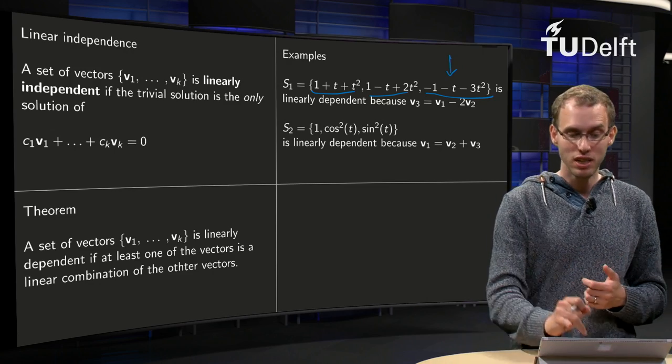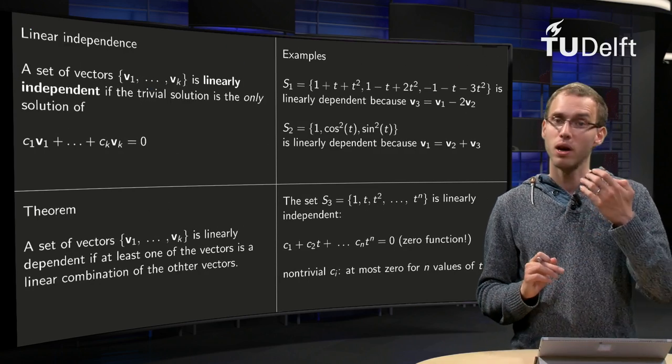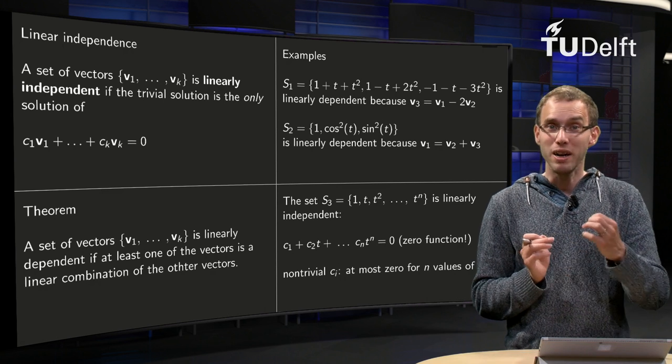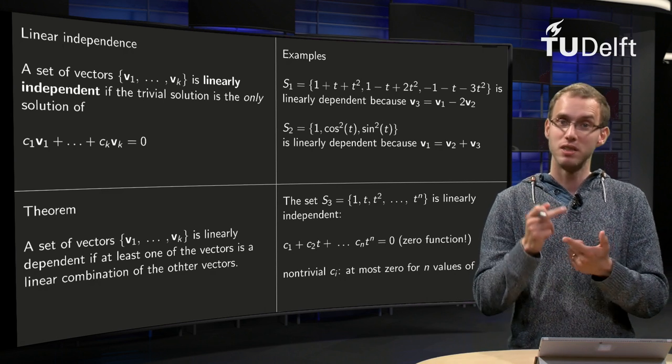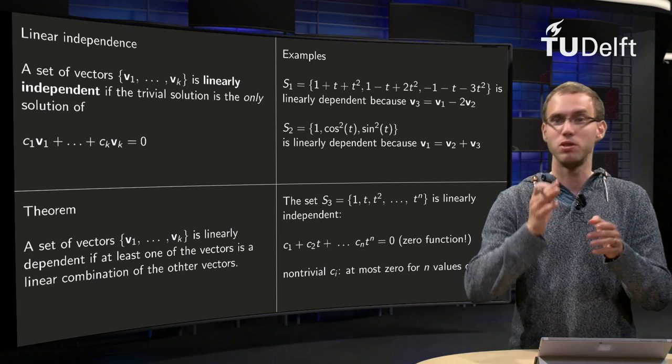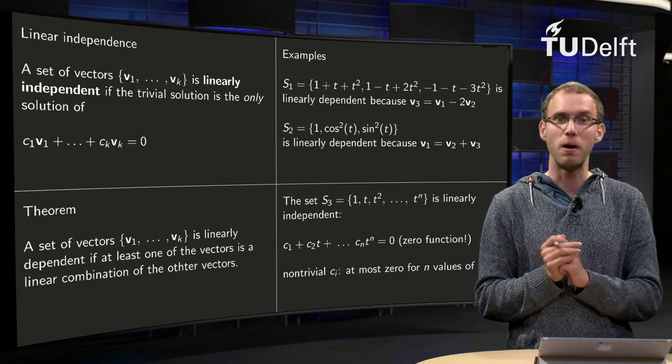Can we also find independent sets? If we look at the polynomials, there is a very important independent set, the set consisting of the polynomial 1, t, t squared, t cubed, t to the power 4, etc., etc., up till t to the power n, until some power.